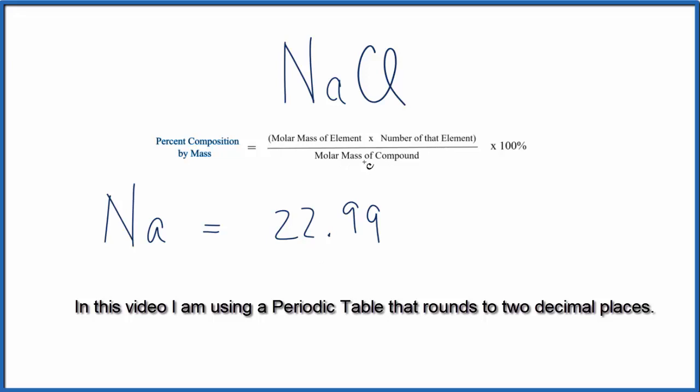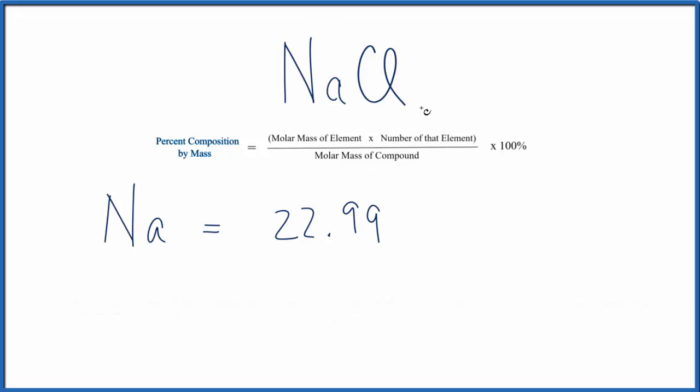Then we'll divide this by the molar mass of the entire compound. When we do percents, it's the part over the whole. So Na is the part, and NaCl is the entire compound. That's the whole.